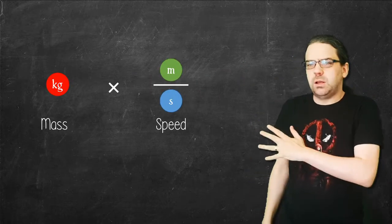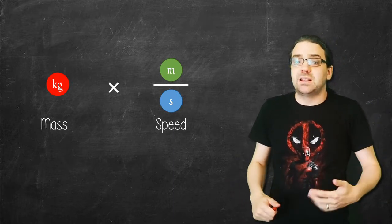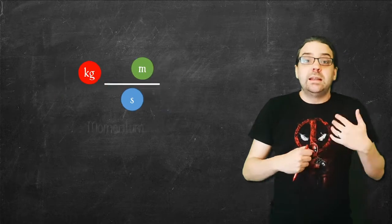We can multiply units together and the quantity changes. For instance, mass multiplied by speed leads to momentum.